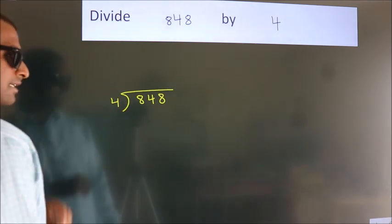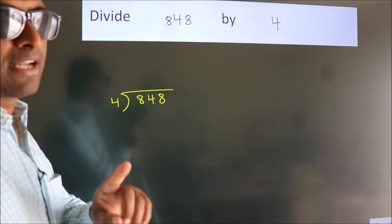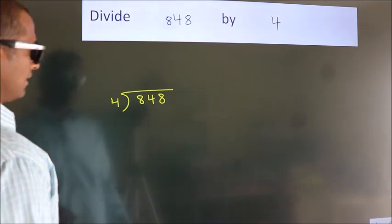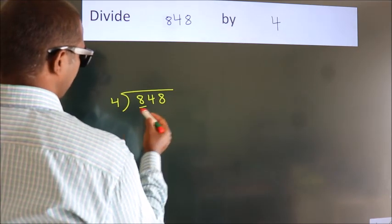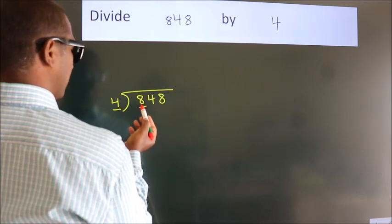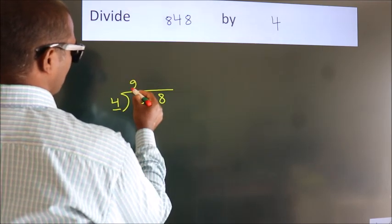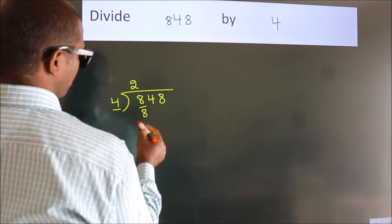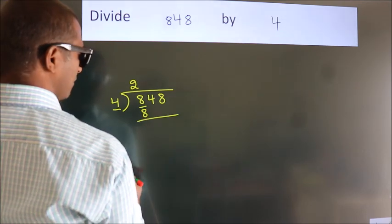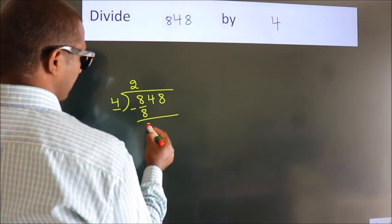This is your step 1. Next, here we have 8, here 4. When do we get 8? In 4 table, 4 2s, 8. Now, we should subtract. We get 0.